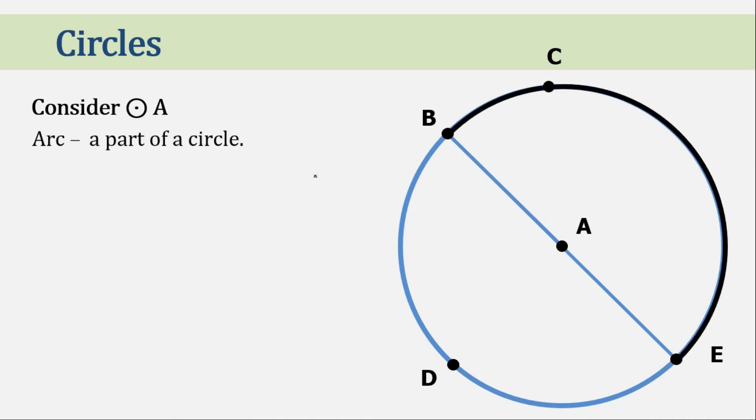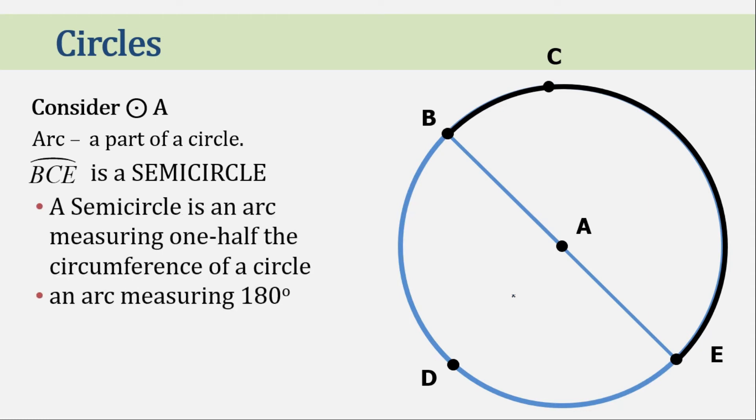Now, let's discuss the semicircle. Arc BCE. So this is a semicircle. A semicircle is an arc measuring one half of the circumference of a circle, or an arc measuring 180 degrees. Exactly 180 degrees.